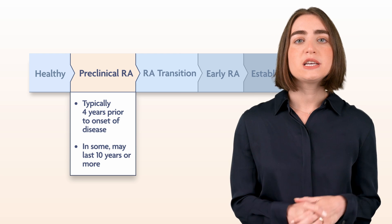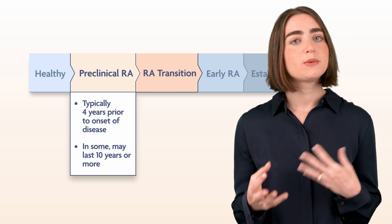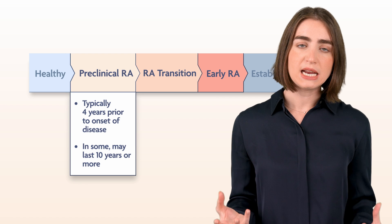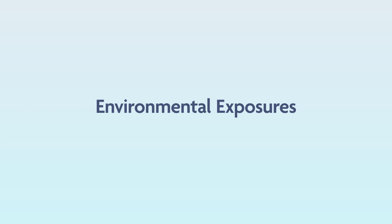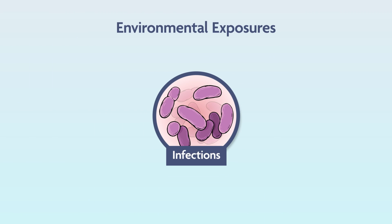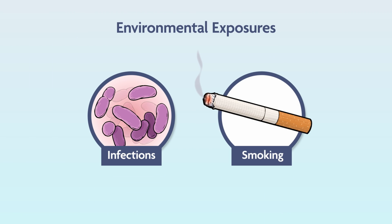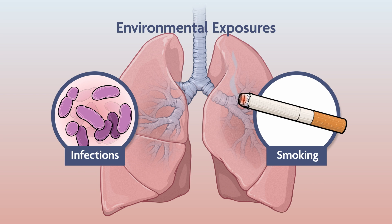Patients may experience a second hit, perhaps from a viral infection, that will precipitate active disease. Environmental triggers such as infections, and notably smoking, can result in disordered immunity, which may start at mucosal surfaces such as the airway.